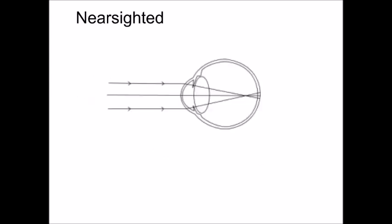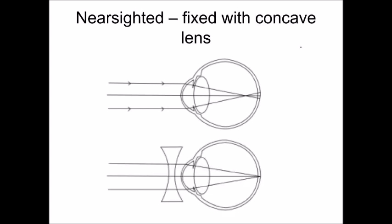Now, I'm a little bit nearsighted. That means I can see things that are close by, but when I see things that are farther away, that's a little bit of a problem for me. I need to correct that with a concave lens. That concave lens spreads the light out a little bit, so instead of being focused in the wrong place, the light comes together in the right place.